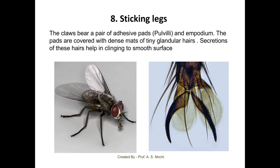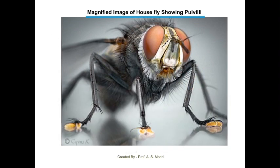The next is the sticking type of legs, found in case of house fly. The claws bear a pair of adhesive pads called pulvilli and empodium. The pads are covered with dense mats of tiny glandular hairs. Secretion of these hairs helps in clinging to smooth surfaces. This sticking type of legs in house fly shows the pulvilli.